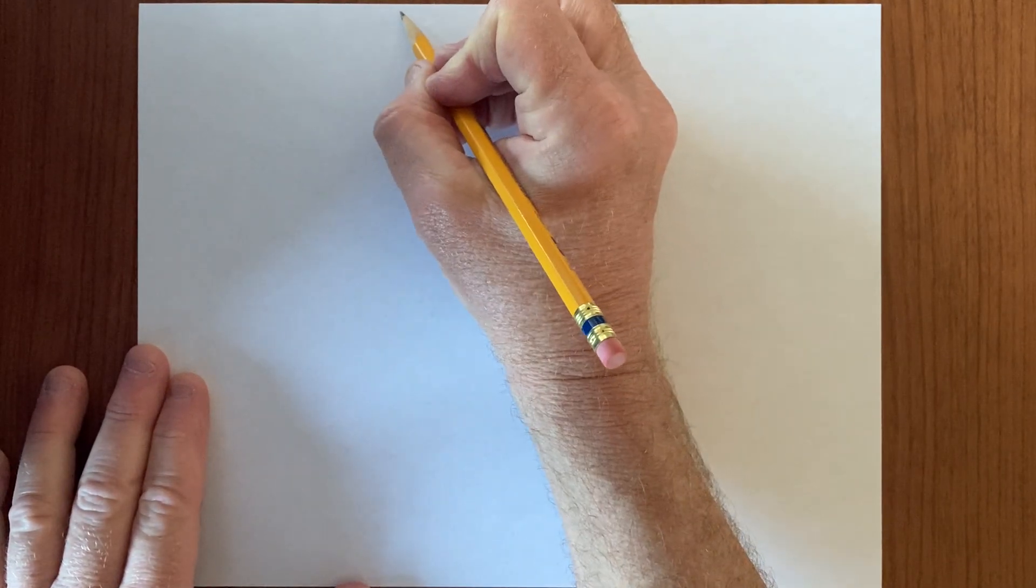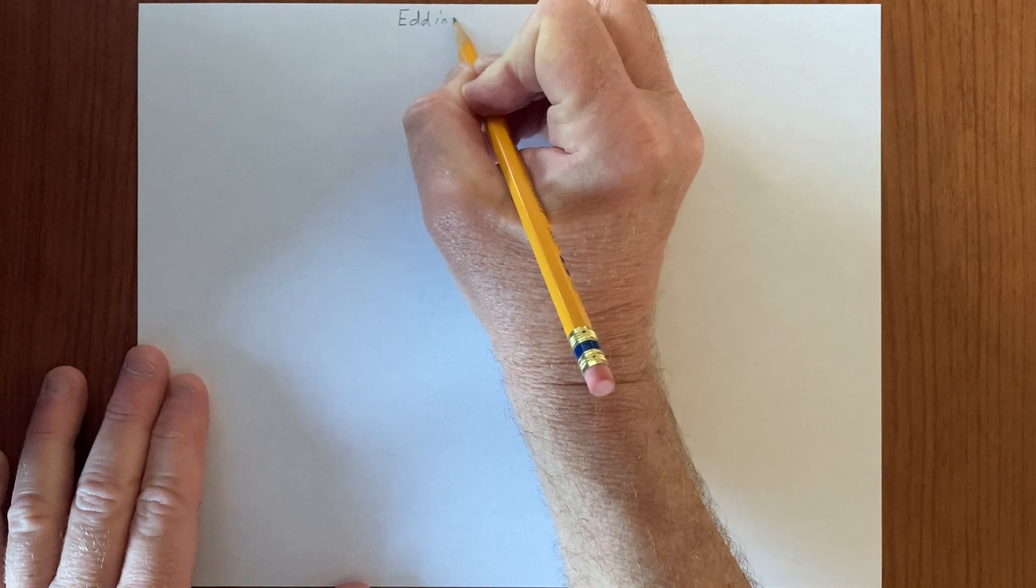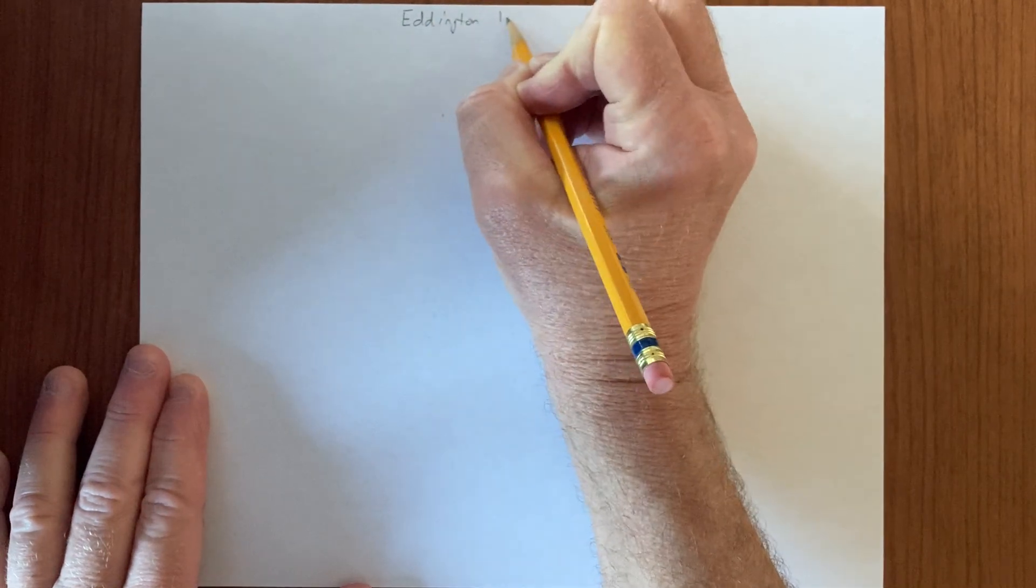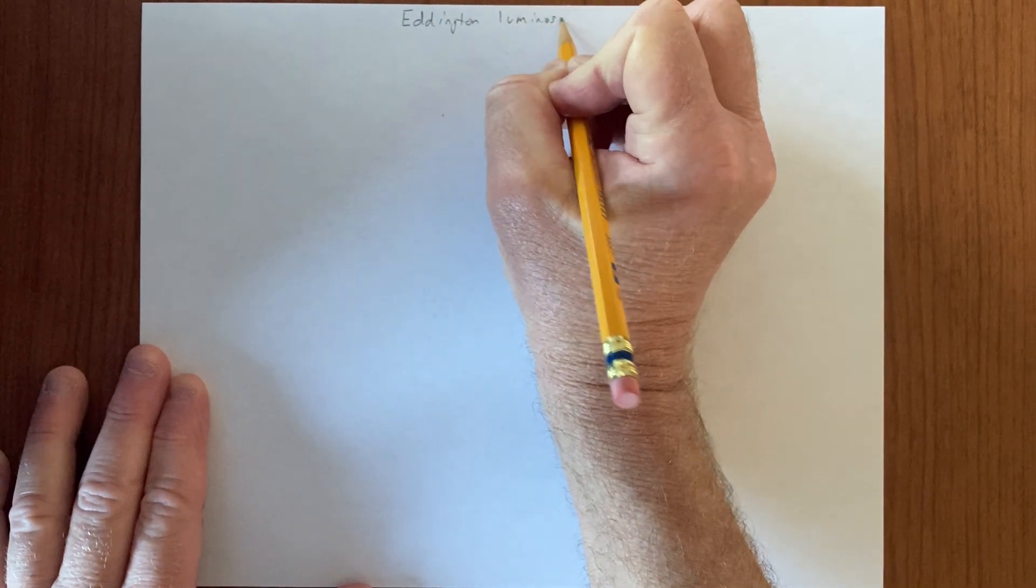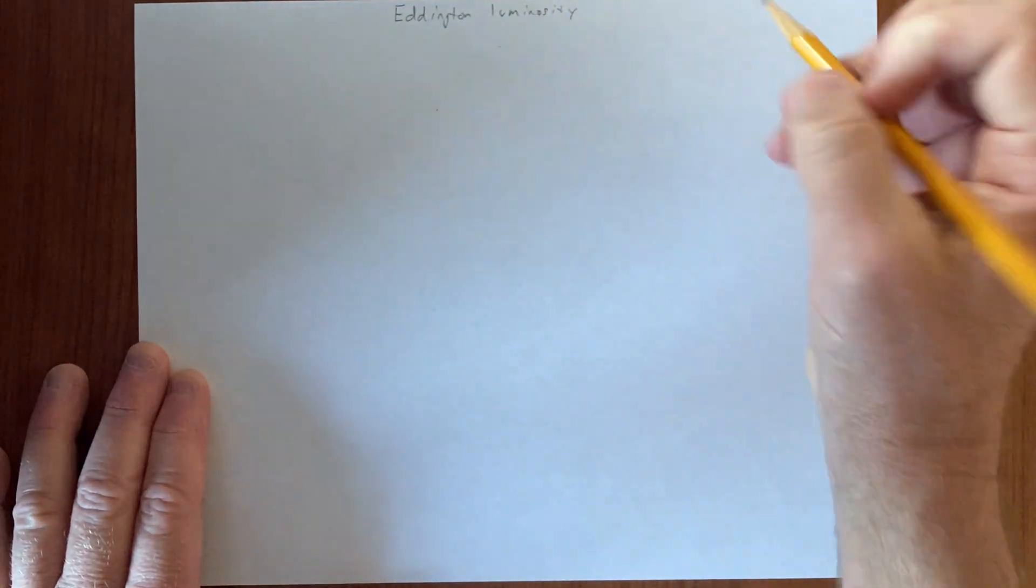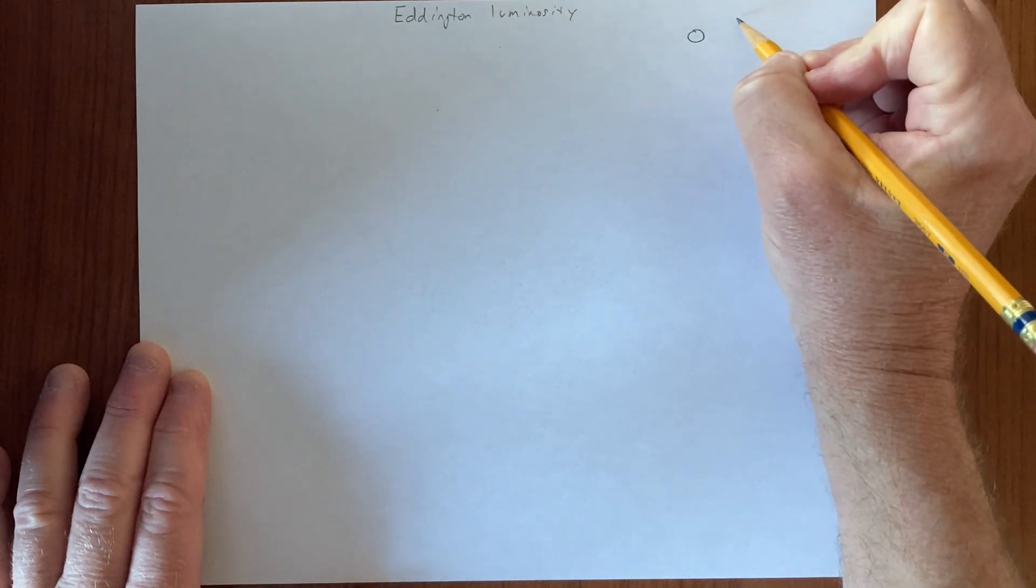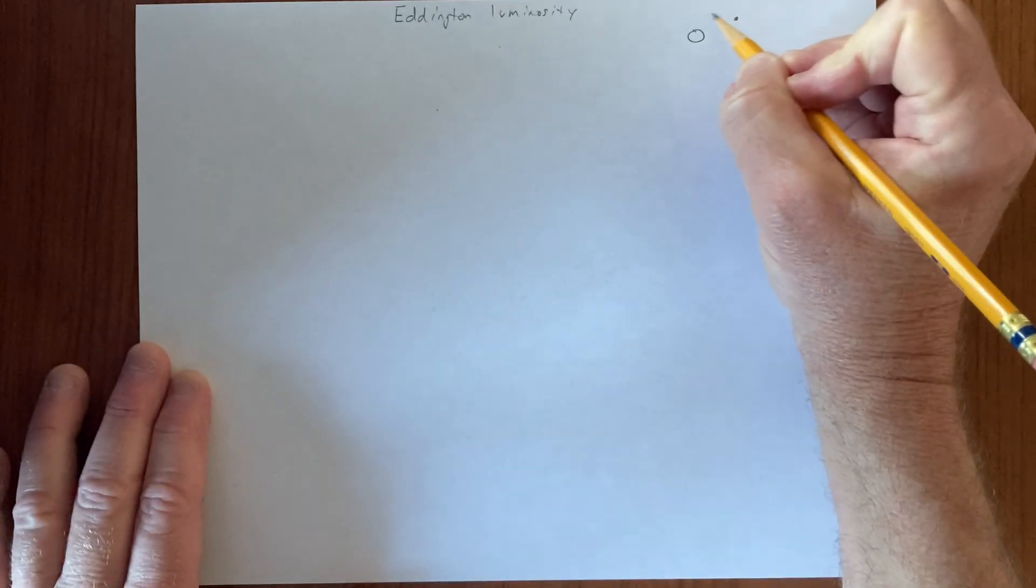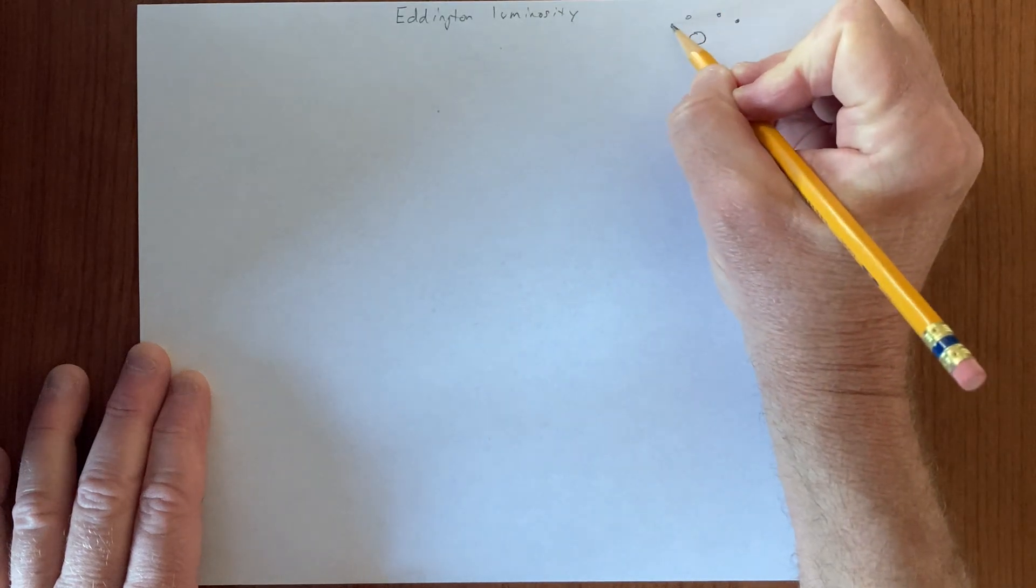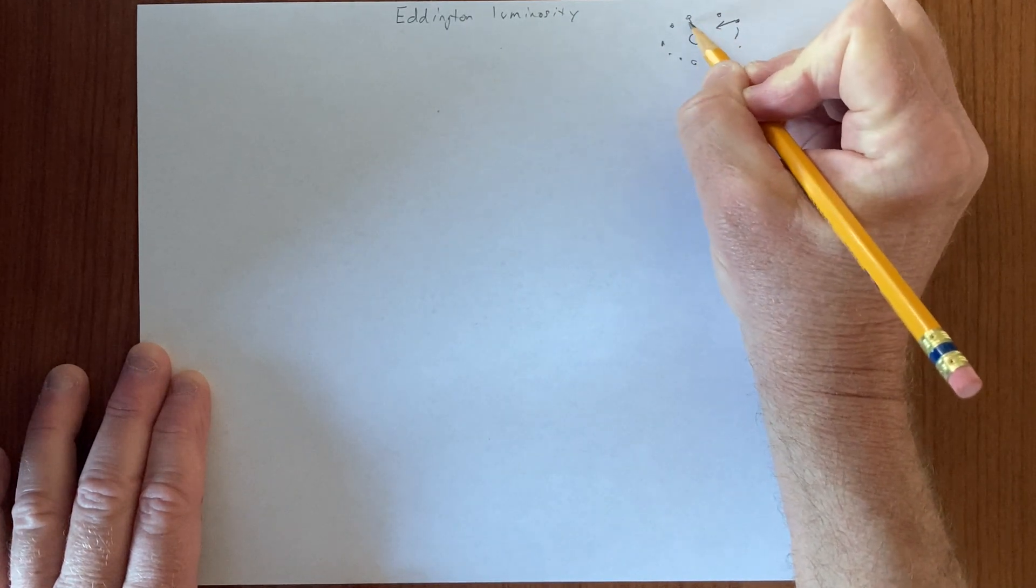We want to talk about and ultimately derive what's called the Eddington luminosity. We're thinking about a black hole. Here's the black hole and there's material falling onto the black hole. Here's a gas of material falling onto the black hole, falling inwards.